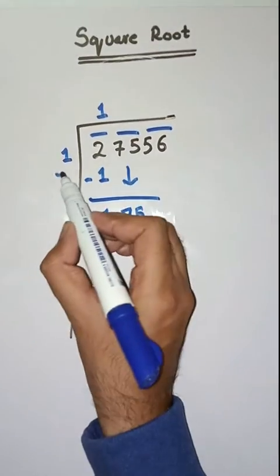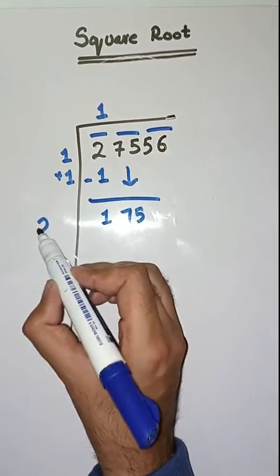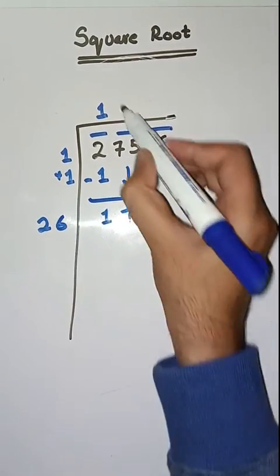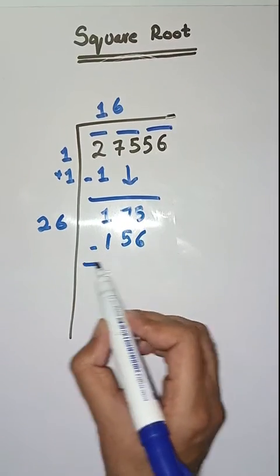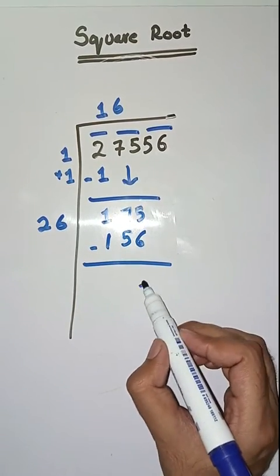26 times 6 is 156. Minus that we get... 15 minus 6 is equal to 9, 6 minus 5 is equal to 1. Next 56 is coming down. Here we will do